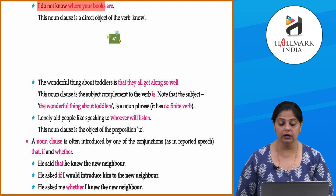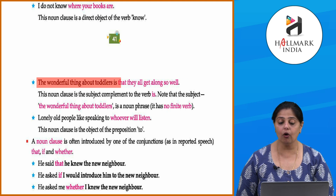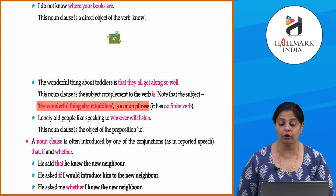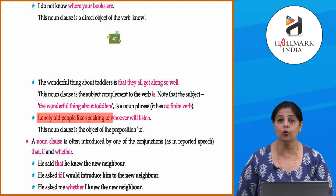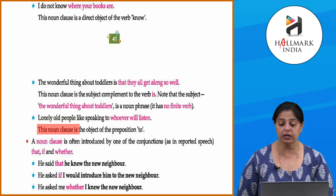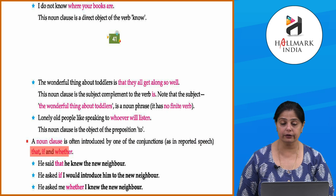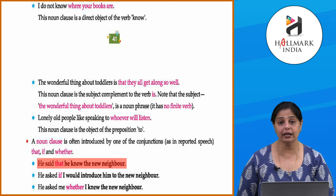'I do not know where your books are' — this noun clause is a direct object of the verb 'know.' 'The wonderful thing about toddlers is that they all get along so well' — this noun clause is the subject complement of the verb 'is.' Note that 'the wonderful thing about toddlers' is a noun phrase with no finite verb. 'Lonely old people like speaking to whoever will listen' — this noun clause is the object of the preposition 'to.' A noun clause is often introduced by conjunctions like 'that,' 'if,' and 'whether,' especially in reported speech.